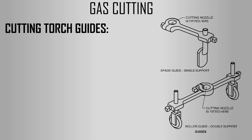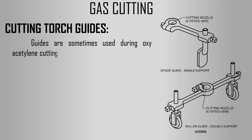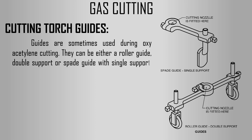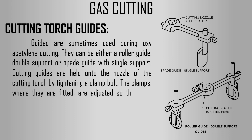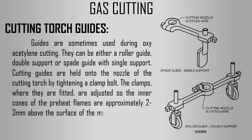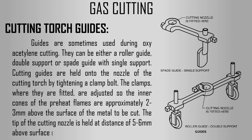Last, we are going to discuss about the cutting torch guide. Guides are sometimes used during oxyacetylene cutting. They can be either a roller guide with double support or a spade guide with single support. Cutting guides are held onto the nozzle of the cutting torch by tightening a clamp bolt. The clamps are adjusted so the inner cones of the preheat flames are approximately 2 to 3 mm above the surface of the metal to be cut. The tip of the cutting nozzle is held at a distance of 5 to 6 mm above the surface of the plate being cut.